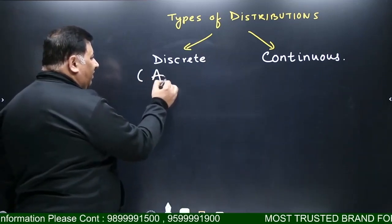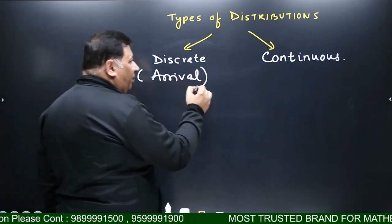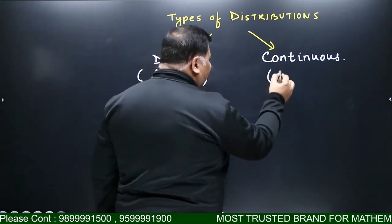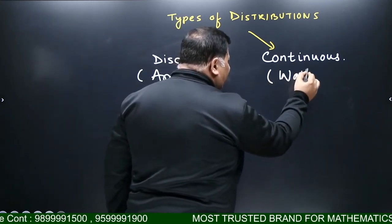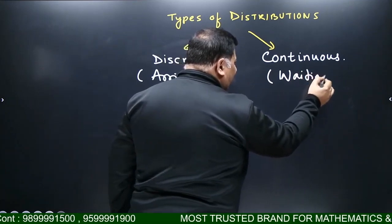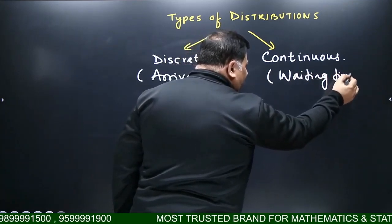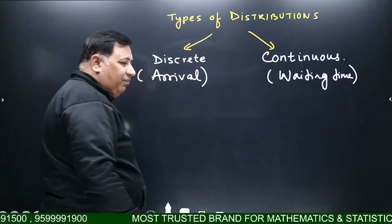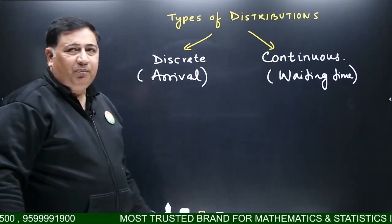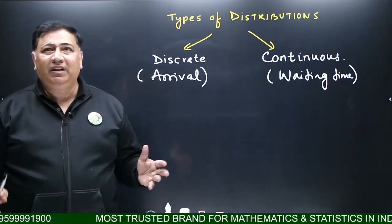Arrival pattern — such as coming from your phone or waiting time, like waiting for your friend. There are two types of patterns in your life: problems are of two types, and correspondingly models are of two types.